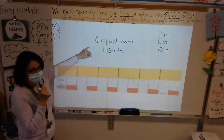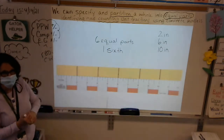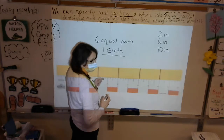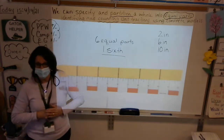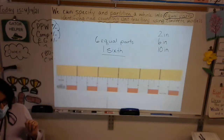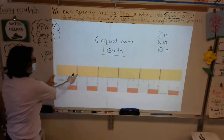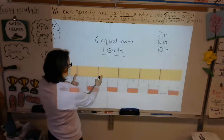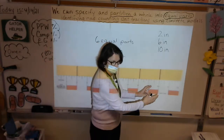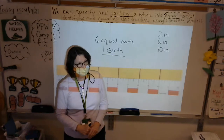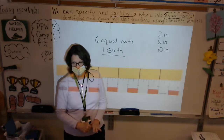Notice all your parts — all your partitions on your strip are all equal. Look at what a nice job Miss Zimmer did on hers; they're all the same size. If you don't have equal parts, guess what? You don't have fractions.